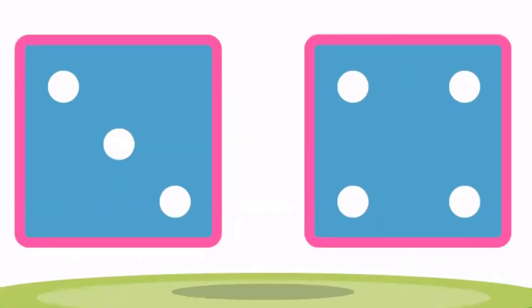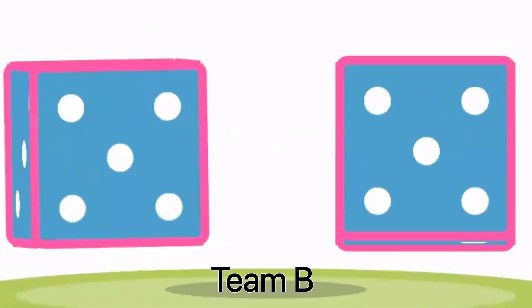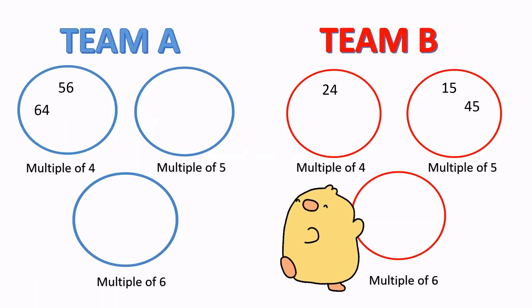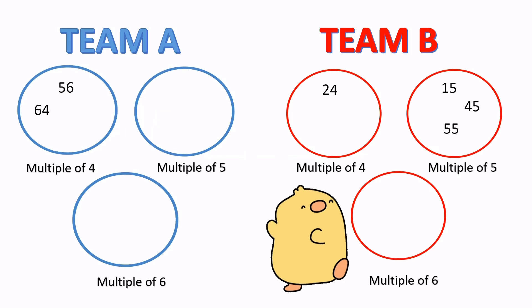Time for round four. We will not write thirty-four anywhere. Fifty-five — fifty-five will again come in the circle of five.